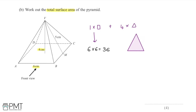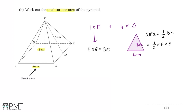Now we need to add on four lots of the area of one of the triangular faces. If I redraw one of these triangles, I can take the base length of 6cm and then the height of the triangle. This isn't going to be the height of the pyramid — not the 4cm. It's going to be the distance between the top of the triangle and the midpoint on its base, which is the distance VM, and we're told that's 5cm. The area of a triangle is a half times base times height, so it's a half times 6 times 5, which gives an answer of 15.